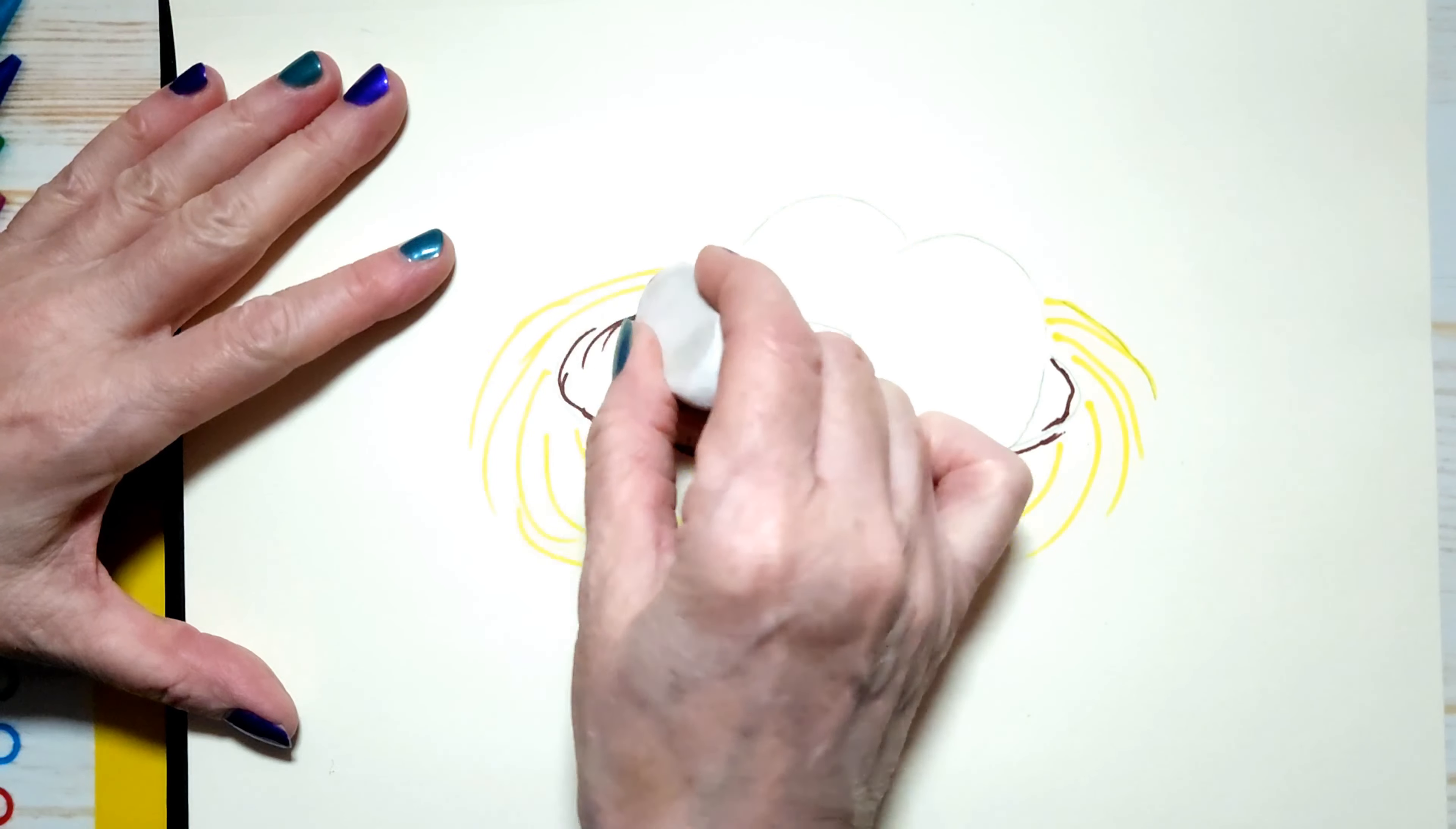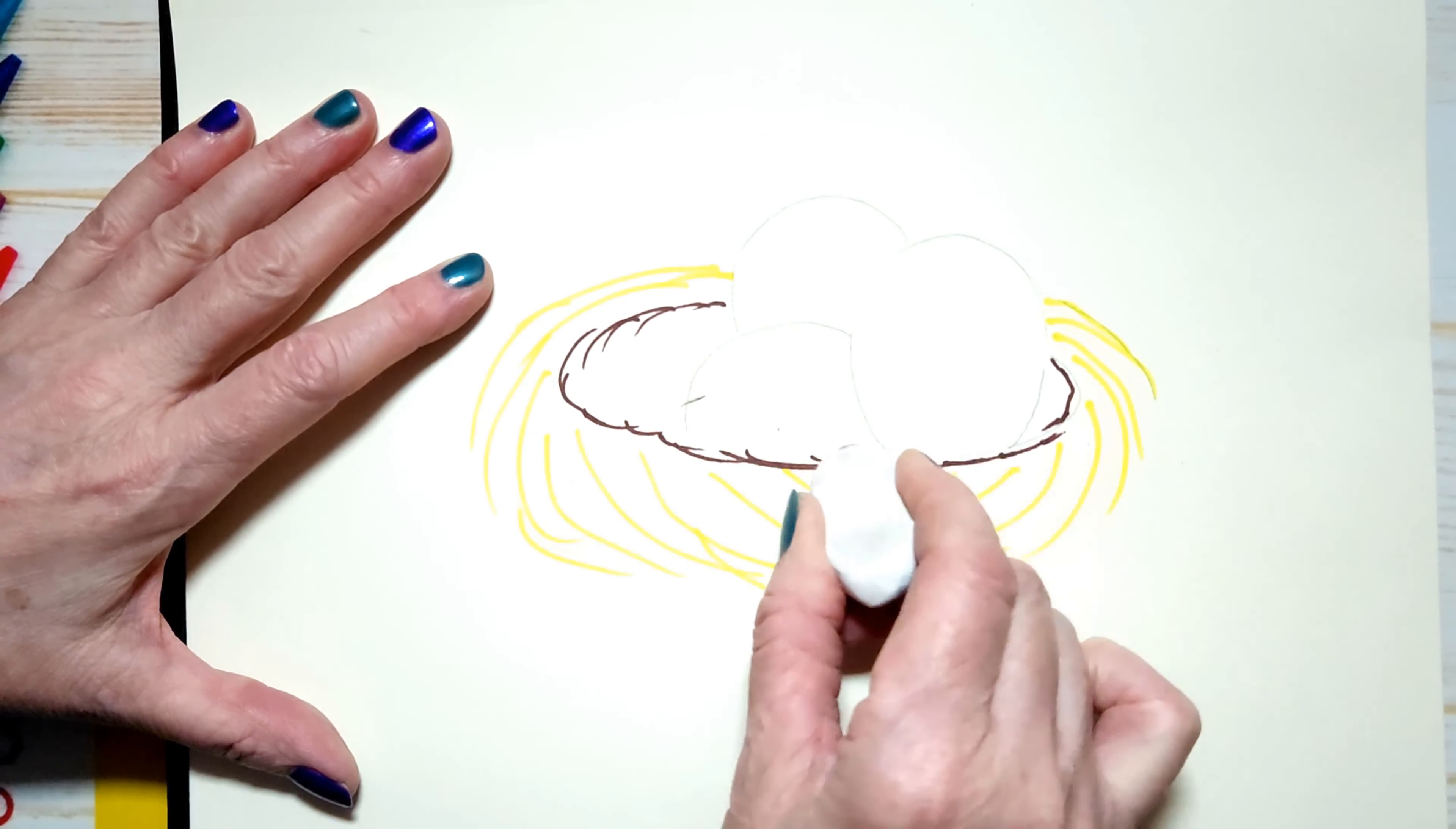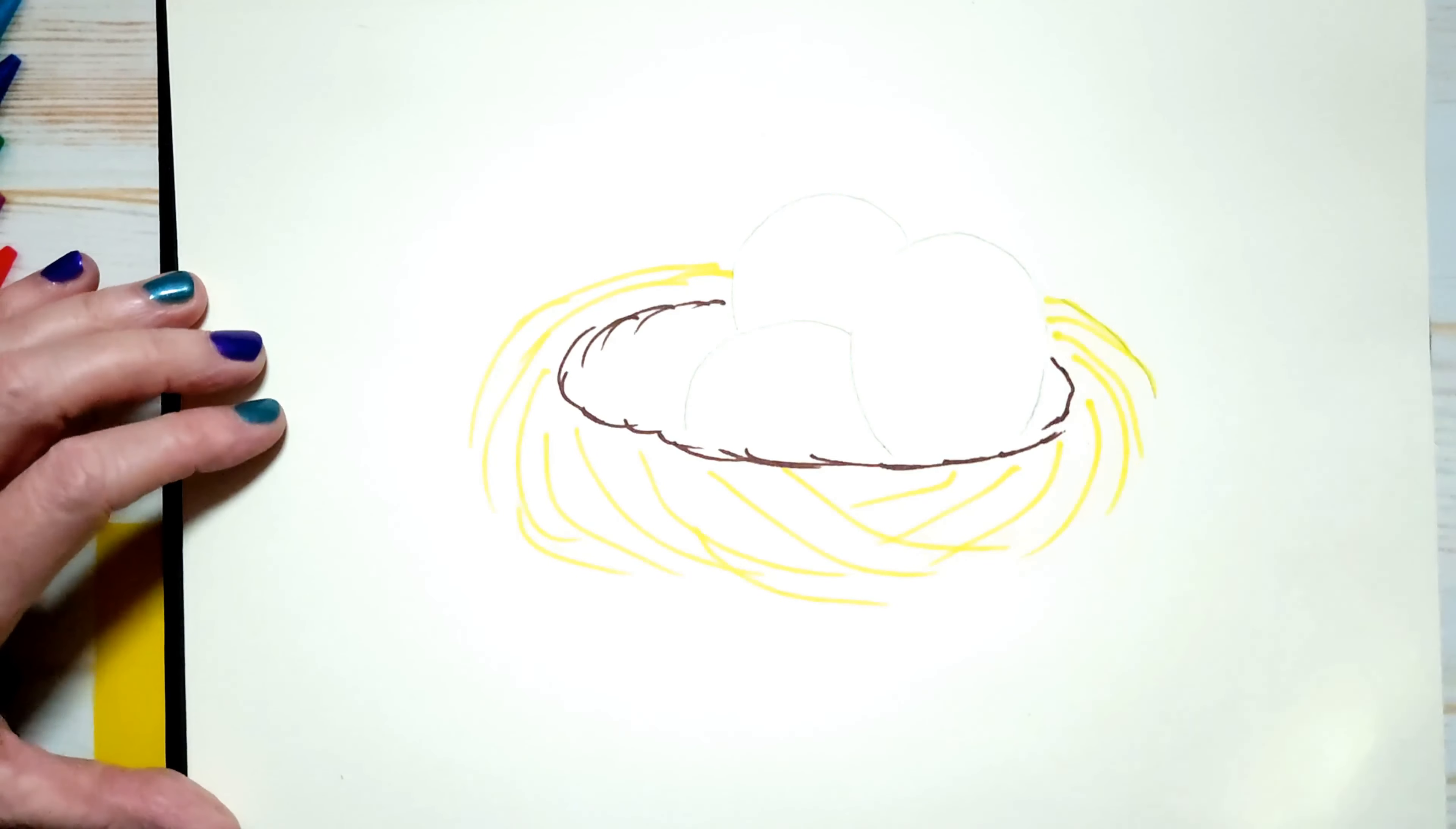I don't know why. With any other marker you can erase pencil marks that you make. But if the Sharpie goes over it, they don't erase very well.